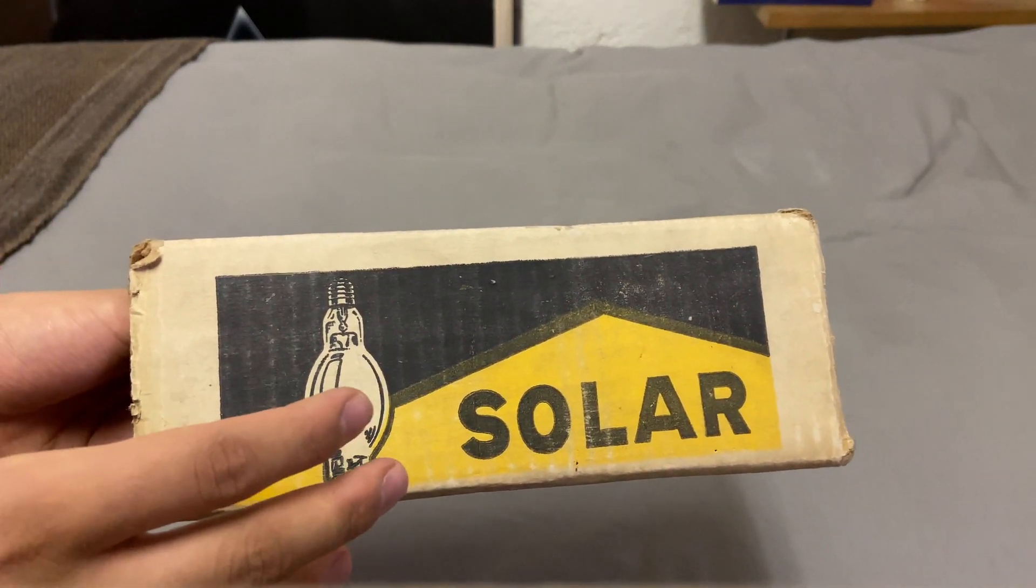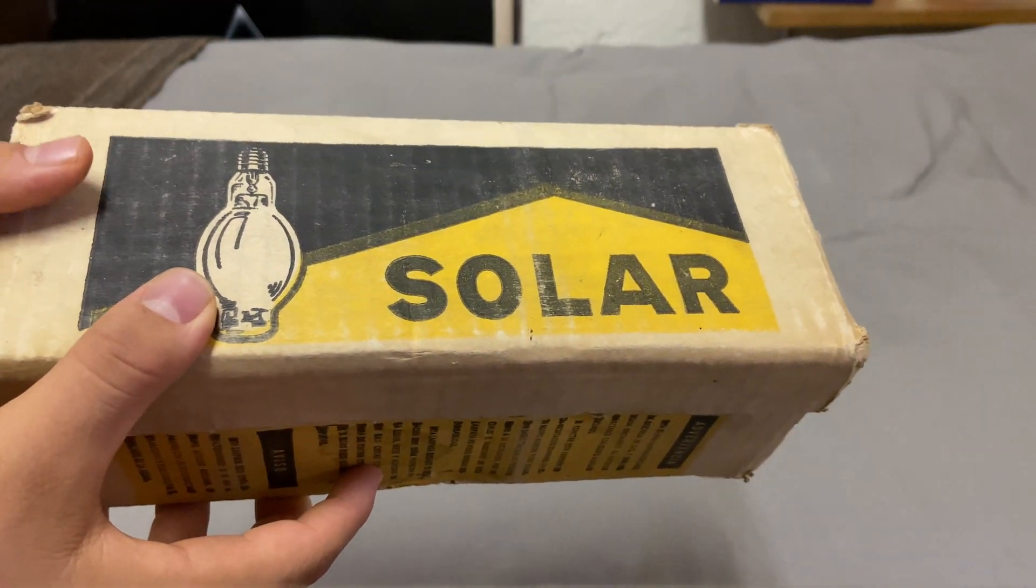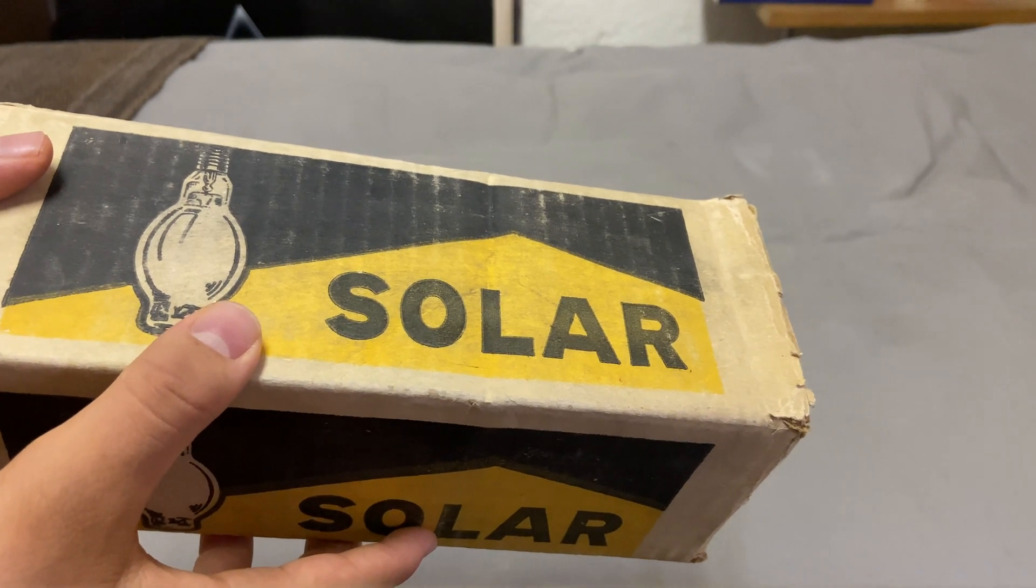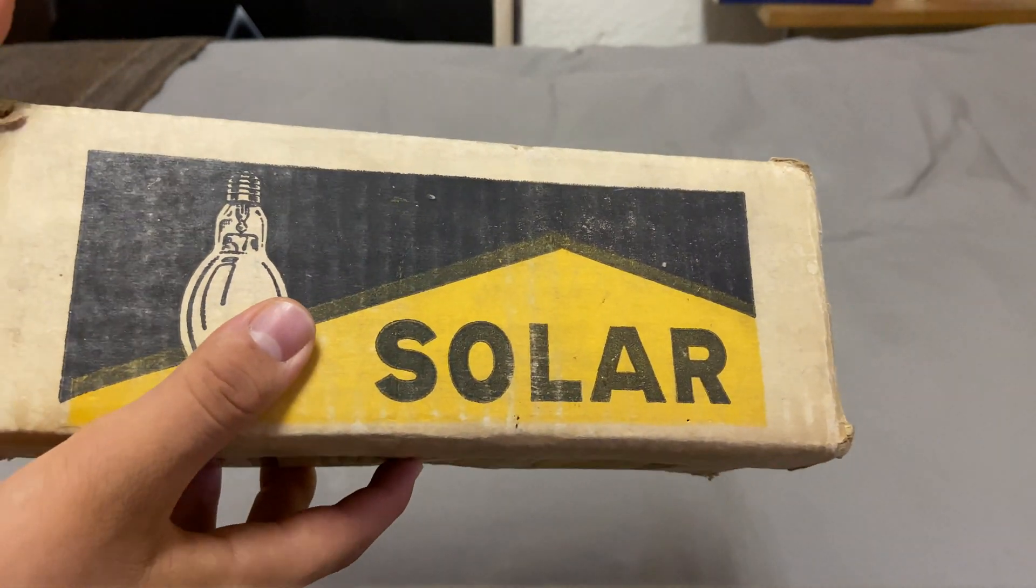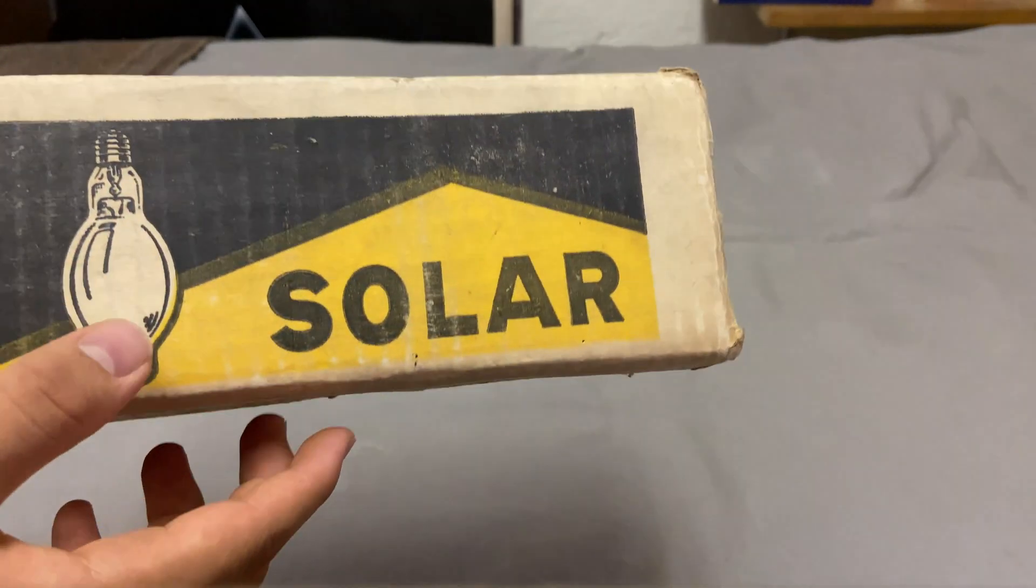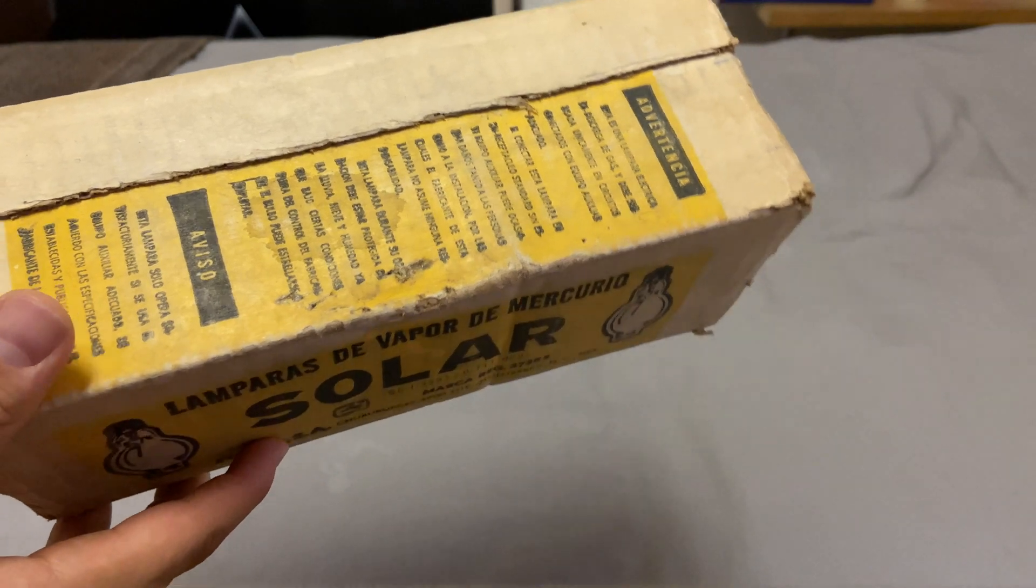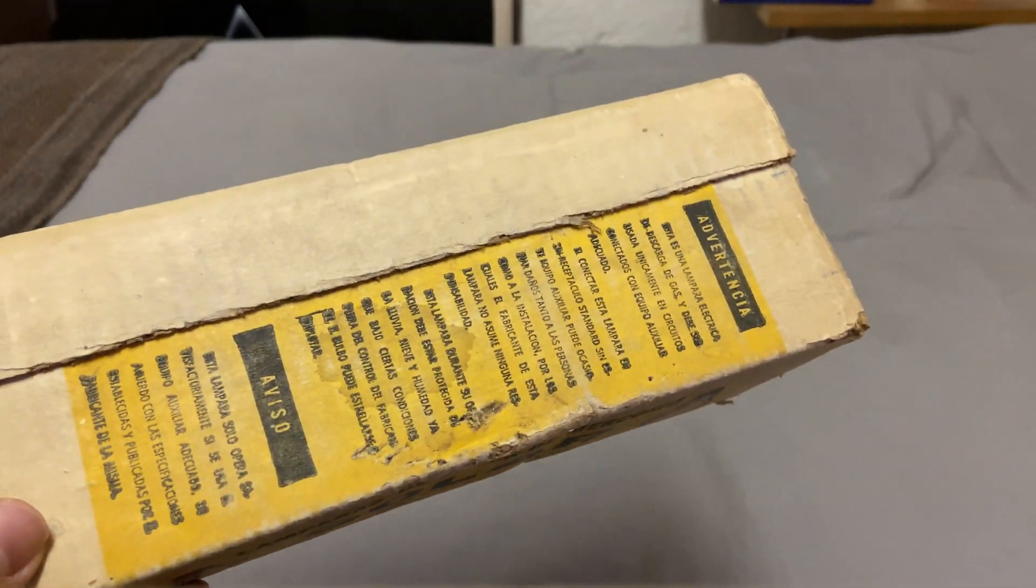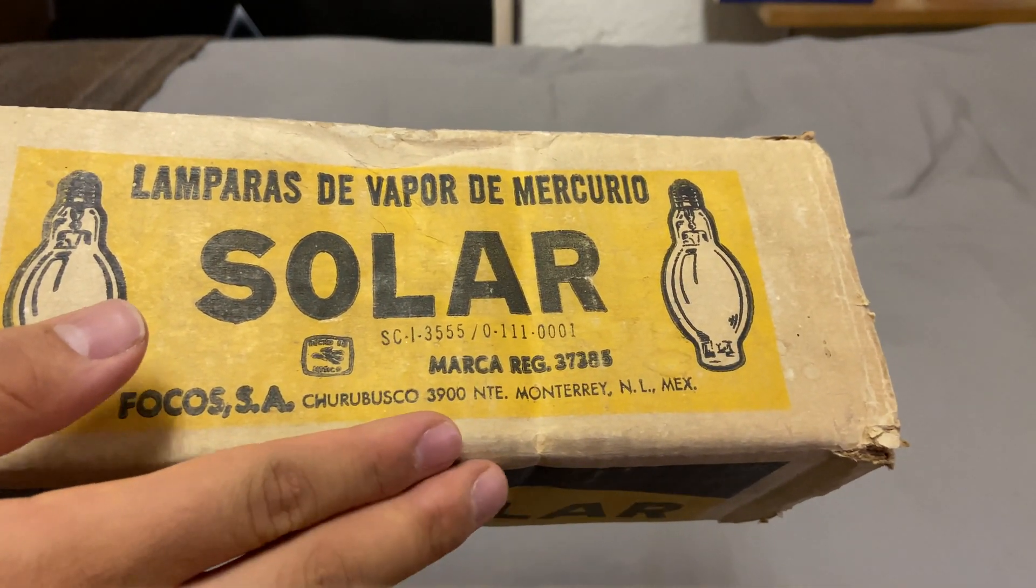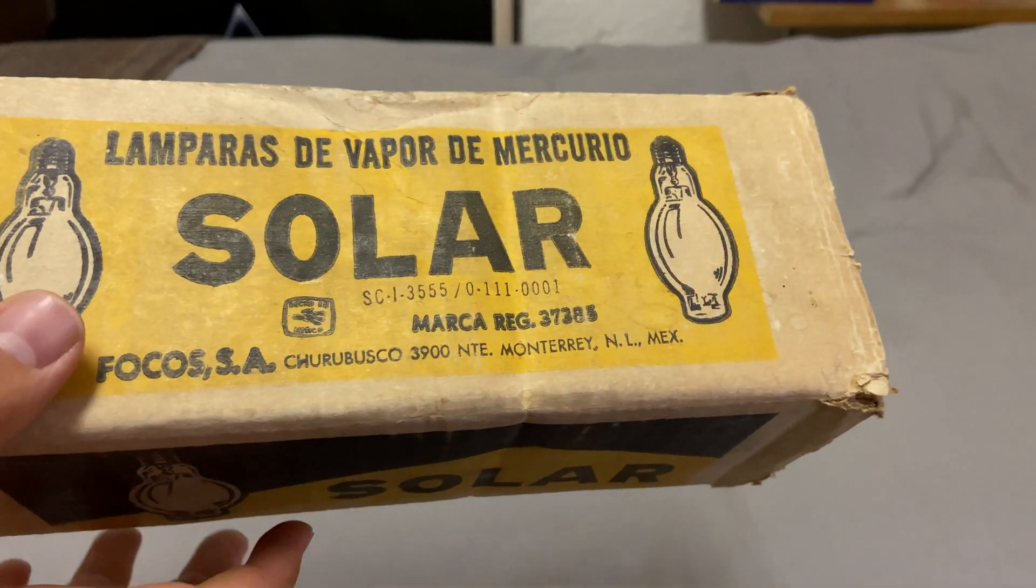Solar is a Mexican brand that was helped by the Mexican government that used to make bulbs, lighting bulbs, and all kinds of electrical stuff from the 1960s up to the 1980s. And then it was absorbed by other bigger companies like Philips. And as you can see, the factory was in Monterrey, Nuevo León, in the northern part of the country.